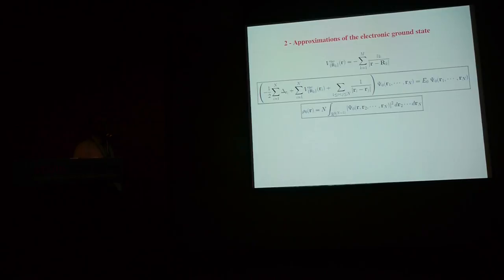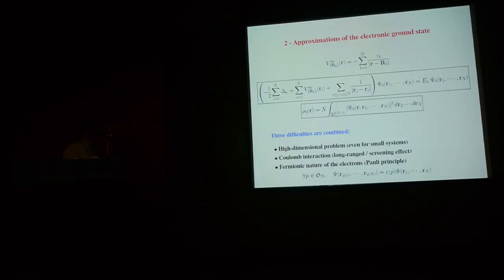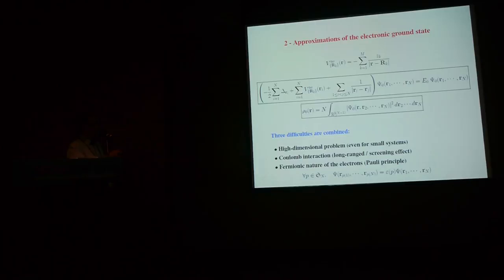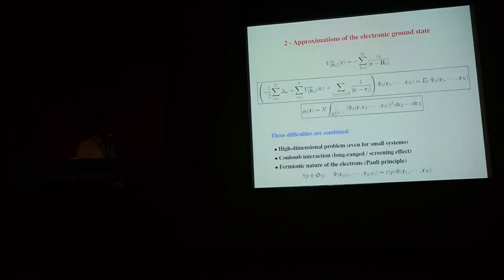This problem is difficult because of a combination of three difficulties. First, it is a high-dimensional problem even for small molecules — the water molecule has 10 electrons, giving a PDE in dimension 30. Larger systems are even worse. Second, the particles interact via Coulomb interaction, which has its own specificities we will return to. Third is the fermionic nature of the electrons: the wave function must satisfy the anti-symmetry property.